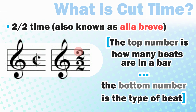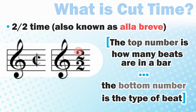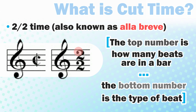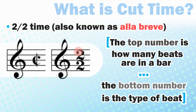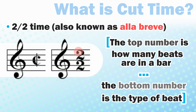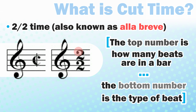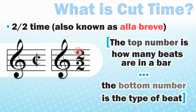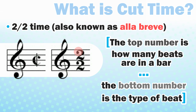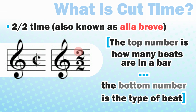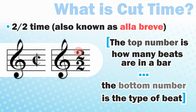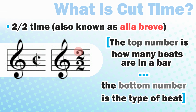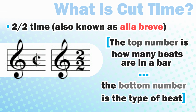Where this gets confusing is that if you remember fractions from math class, 2-2 is mathematically equivalent to 4-4. You just break it down. So 2 half beats per bar means the same thing as 4 quarter beats per bar. That's why we're going to talk about how they're actually different, even though they're mathematically the same.